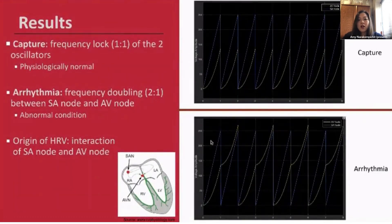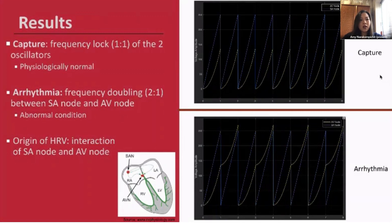By modeling physiology correctly, arrhythmias should emerge on their own, and we found that the source of variability originates from the interaction between the SA node and the AV node. On the right, there are time plots of the SA node in blue and the AV node in yellow, and the model was able to generate capture where the AV node and SA node oscillate with a single frequency, running one-to-one, which is physiologically accurate.